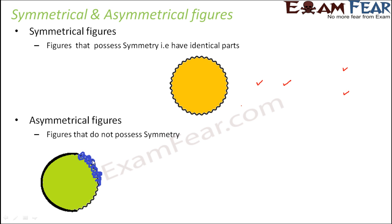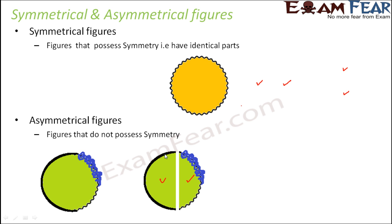Let us do the same exercise with this figure. Let's assume a line like this which divides it into two equal halves. Now, just looking at this, do you think this half and this half are exactly identical? No, they are not. When you look at the boundary of one half, it is completely plain. But the boundary of the other half is wavy somewhere and rough somewhere — it's all haphazard. So definitely these two halves are not identical. And if they are not identical, there is no question that they would coincide or overlap with each other.